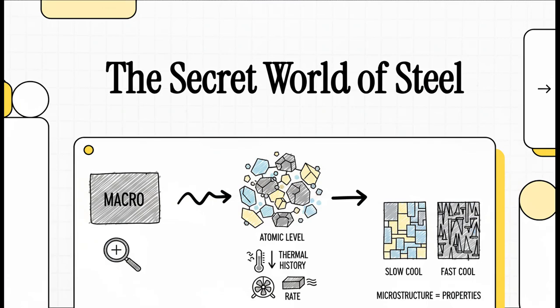When you look at a piece of steel, it seems, well, simple, right? It's strong. It's everywhere. It's just metal. But if you could zoom in — way down to the atomic level — you'd find this secret world that is just breathtakingly complex and beautiful. So today, we're going microscopic to uncover the hidden life of steel.